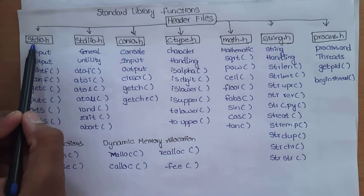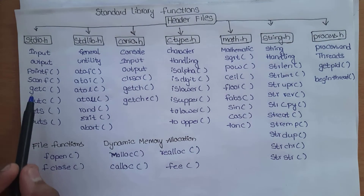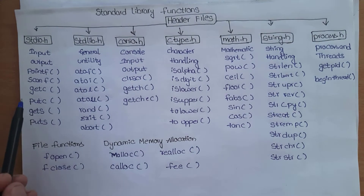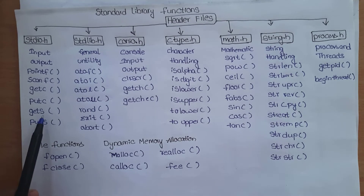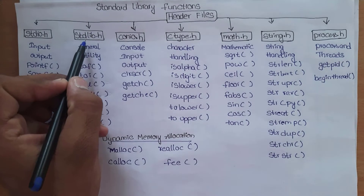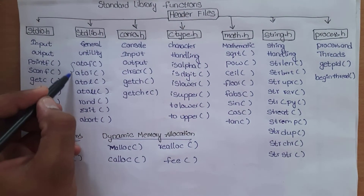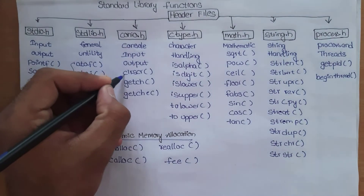stdio.h contains functions such as printf, scanf, getc, putc, gets, and puts — where getc stands for get character, putc stands for put character, gets stands for get string, and puts stands for put string. conio.h contains functions such as clrscr and getch.